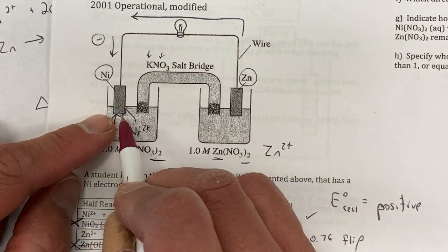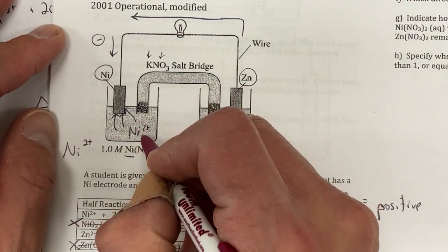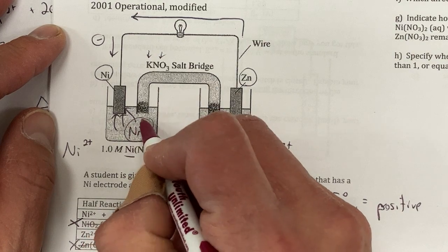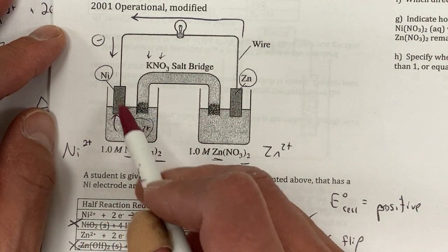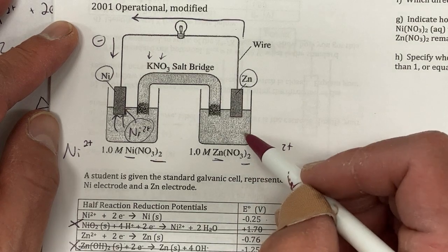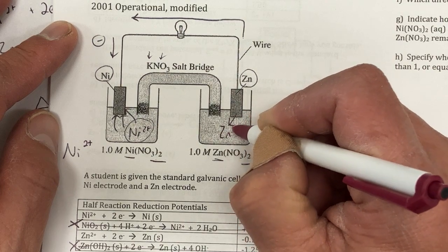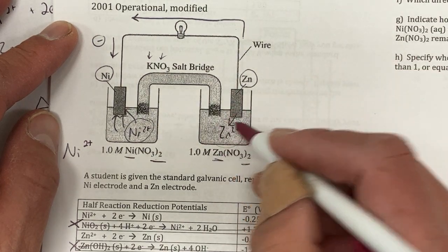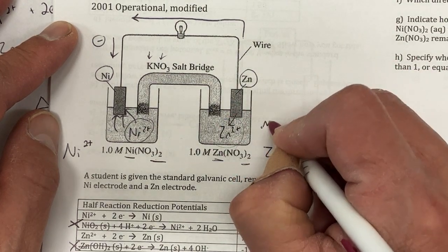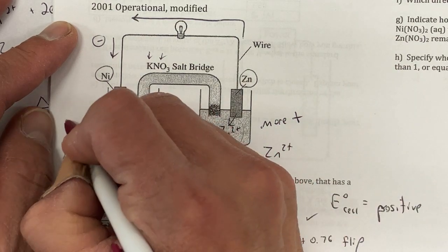But if you're struggling with this, the way I think about it is if I have electrons going into this side here—so this side is becoming, electrons are going here and my Ni²⁺ is going away. So I'm losing positive charges and getting more negative over here. Same thing on this side. I have zinc and that is changing into Zn²⁺. So I'm making more and more positive charges over here. So this becomes more positive and this side is becoming more negative.